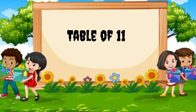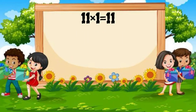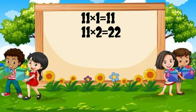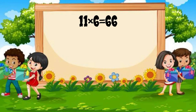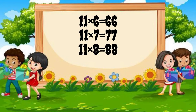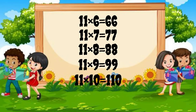Table of 11. 11 1s are 11. 11 2s are 22. 11 3s are 33. 11 4s are 44. 11 5s are 55. 11 6s are 66. 11 7s are 77. 11 8s are 88. 11 9's are 99. 11 10's are 110.